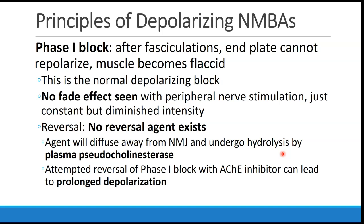These drugs are not normally reversed; there is no specific reversal agent that exists. Recovery occurs when the agent diffuses away from the neuromuscular junction and then undergoes hydrolysis by plasma pseudocholinesterase. An attempt to reverse phase 1 block with an acetylcholinesterase inhibitor like neostigmine could paradoxically lead to prolonged depolarization and prolonged clinical weakness.